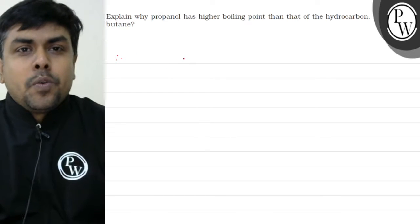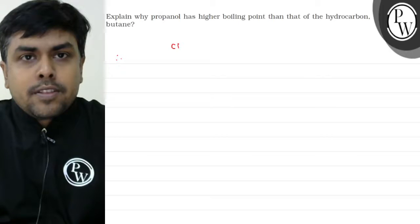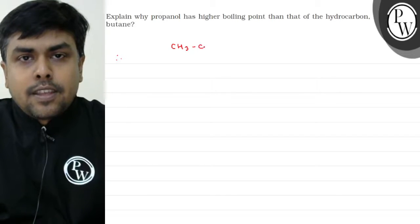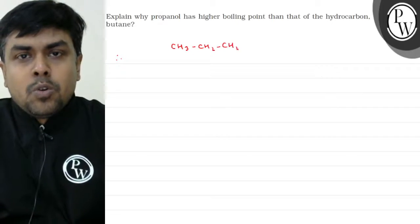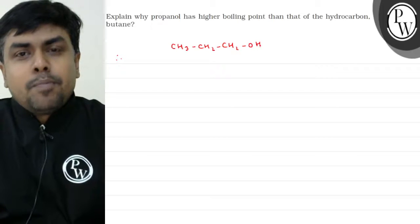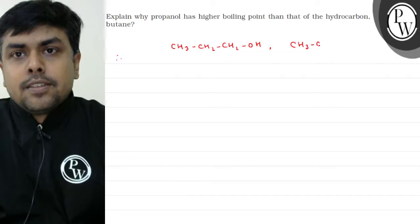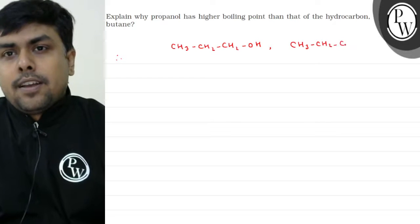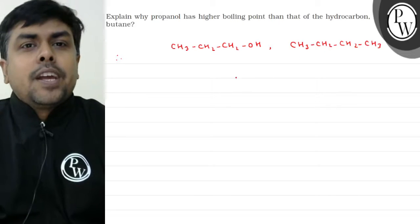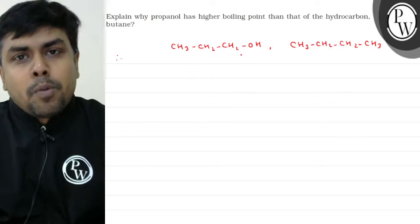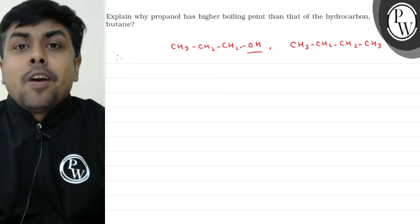First, let's write the structure of propanol. It's CH3CH2CH2OH — this is propanol. Aur butane ki baat karoon to it's CH3CH2CH2CH3 — this is butane.